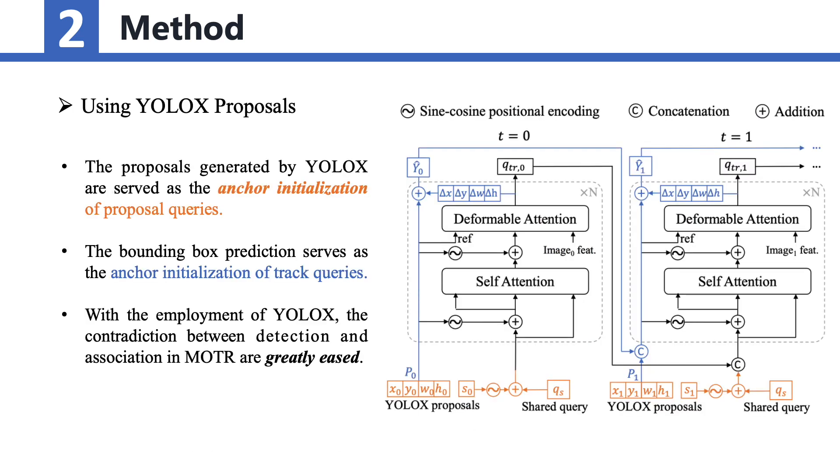In MOTR V2, the proposals generated by YOLO-X serve as the anchor initialization for the proposal queries. These proposals provide a strong starting point for detecting objects within MOTR V2. Similarly, the bounding box predictions from the last frame are used as the anchor initialization for the track queries. This initialization aids in tracking objects accurately across frames.